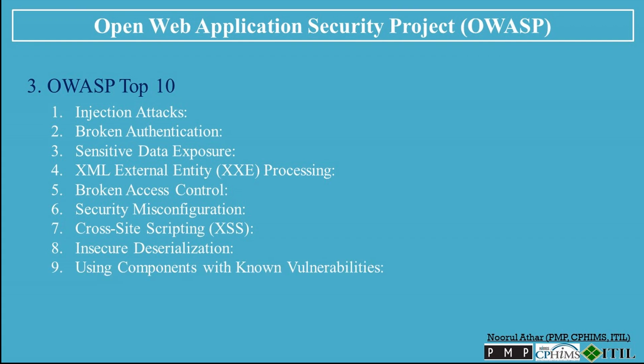Number 9: Using Components with Known Vulnerabilities. Many web applications rely on third-party libraries or components. If these components contain known vulnerabilities and are not updated, attackers can exploit them.